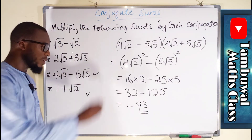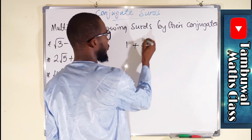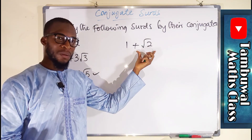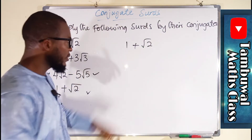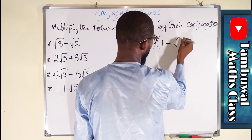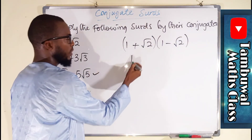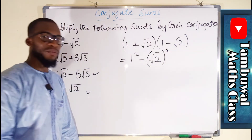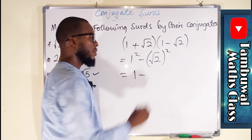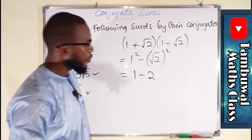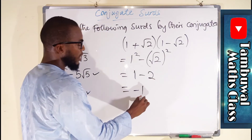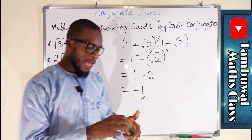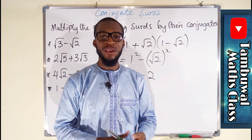Let us move on to the last one: 1 plus √2. This time the first term is rational while the second is a surd, but we can still take the conjugate, which is 1 minus √2. Applying difference of two squares: 1² minus (√2)² equals 1 minus 2, which is negative 1. And negative 1 is a rational number. This is exactly how to multiply a surd by its conjugate. Thank you for watching, have a nice day.